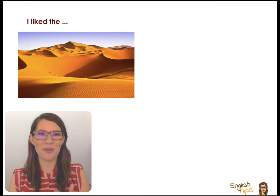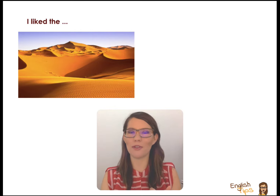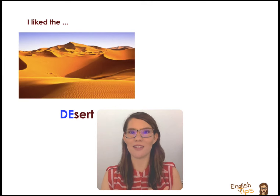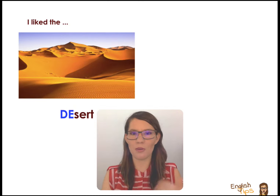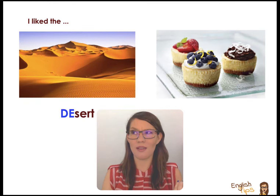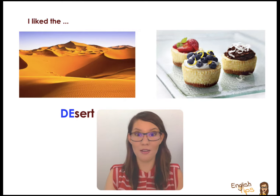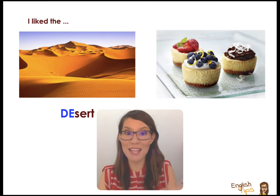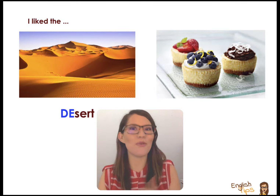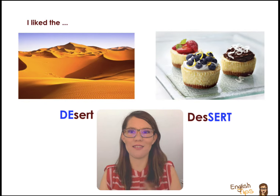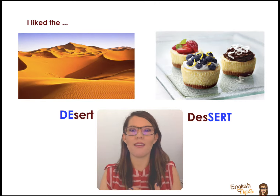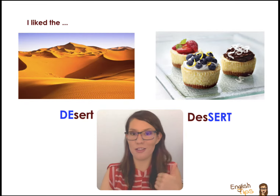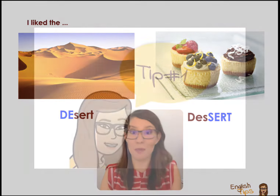One of the most typical mistakes is, for example, if I say something like, I really like the desert. People will be confused about what I'm talking about. Are you talking about a trip? Did you go to the Sahara Desert? And I'll have to say, no, no, I'm talking about the cake — it was amazing. So I didn't really mean the dry place in Sahara. What I was describing was the cake, the cupcake. But I should have said dessert. Instead of that, I said desert. So obviously, there was miscommunication.